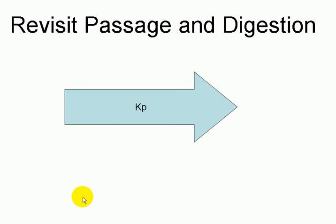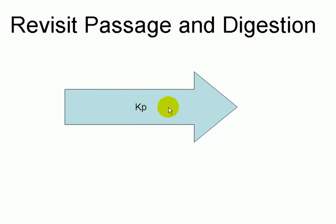Hello, I'm Dave Galligan, and the purpose of this YouTube is to revisit the concepts of passage rate and digestion in the dairy cow. When a cow consumes feed, it passes through the digestive tract, and we measure the speed at which this occurs by a rate called the K-P.